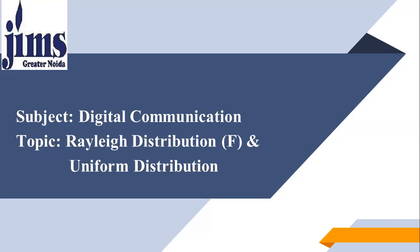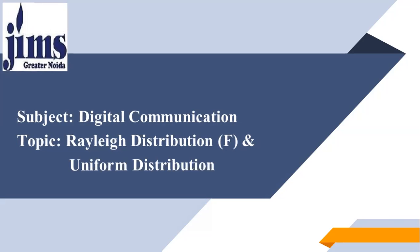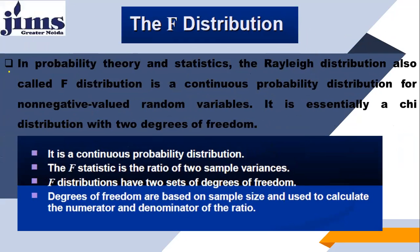Now the topic that I discuss today is Rayleigh distribution. Rayleigh distribution is also called as F distribution. So F distribution is the same as Rayleigh distribution and uniform distribution. In probability theory and statistics, the Rayleigh distribution, also called F distribution, is a continuous probability distribution for non-negative valued random variables.